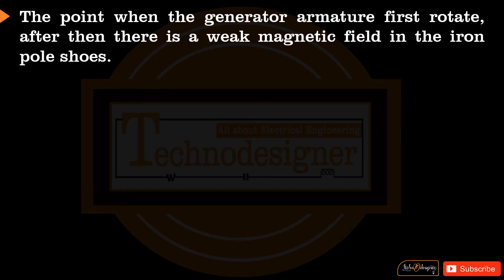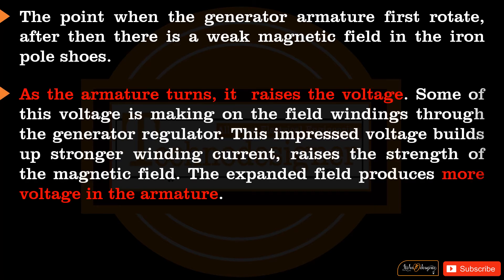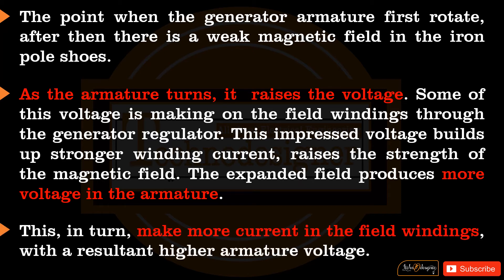When the generator armature first rotates, there is a weak magnetic field in the iron pole shoes. As the armature turns, it raises the voltage. Some of this voltage is applied to the field windings through the generator regulator. This impressed voltage builds up a stronger winding current, raising the strength of the magnetic field. The expanded field produces more voltage in the armature, which in turn makes more current in the field windings, with the resultant higher armature voltage.